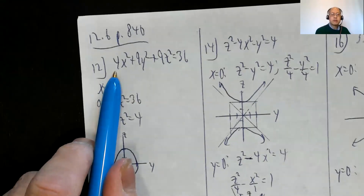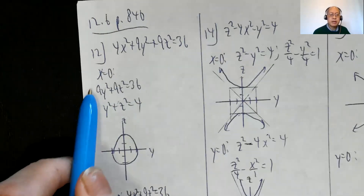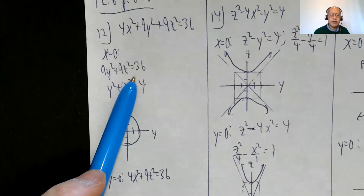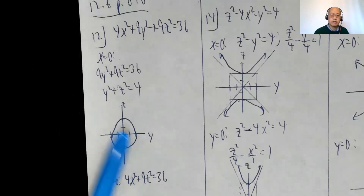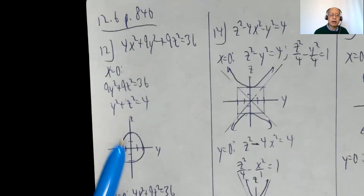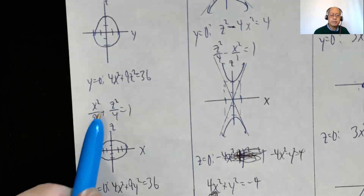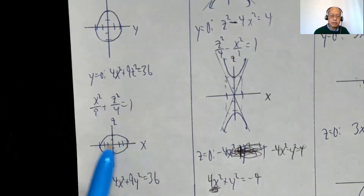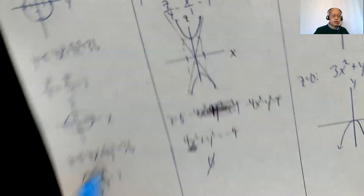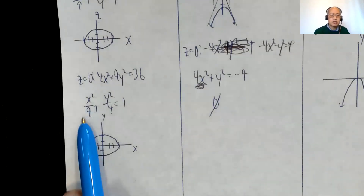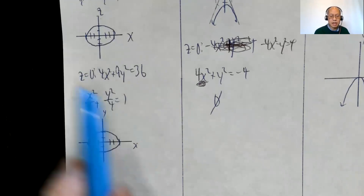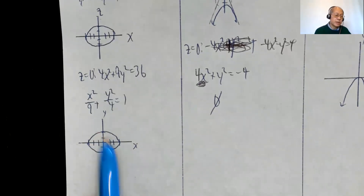Problem 12: 4X² + 9Y² + 9Z² = 36. For the YZ plane (X = 0): 9Y² + 9Z² = 36, giving Y² + Z² = 4 — a circle, center origin, radius 2. For the XZ plane (Y = 0): 4X² + 9Z² = 36, giving X²/9 + Z²/4 = 1 — an ellipse, 3 left and right, 2 up and down. For the XY plane (Z = 0): 4X² + 9Y² = 36, giving X²/9 + Y²/4 = 1 — the same shape, 3 left and right, 2 up and down.